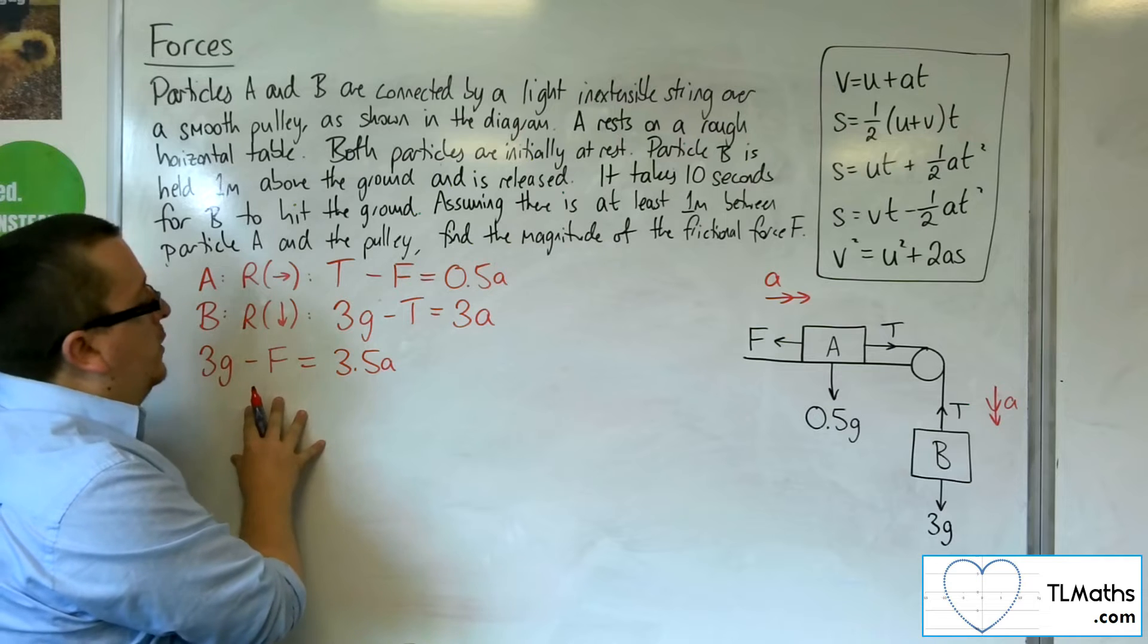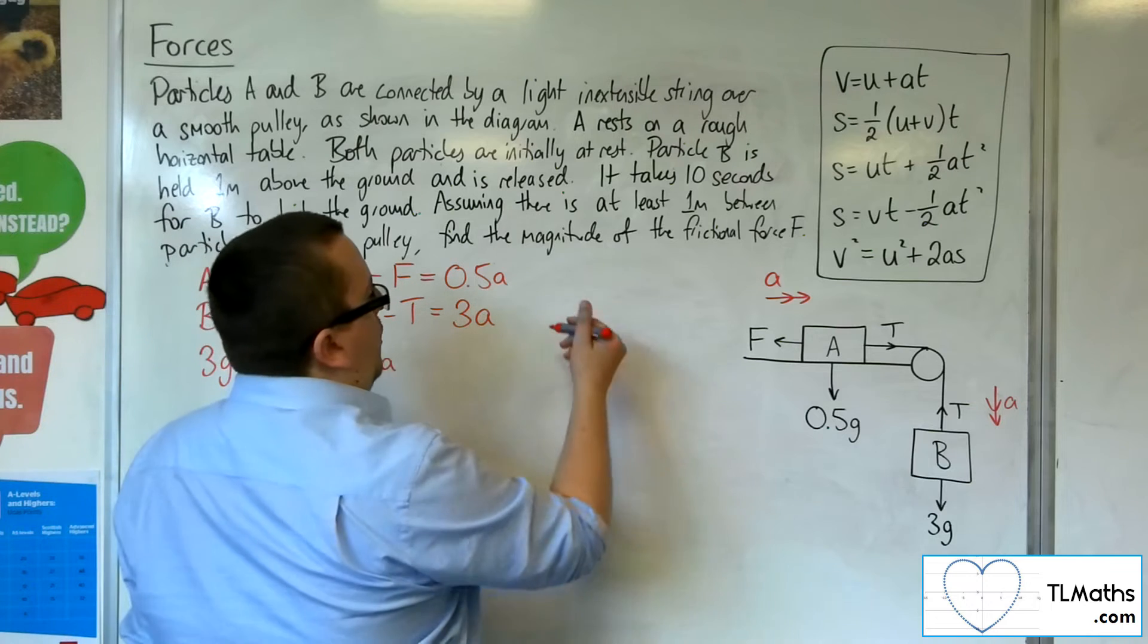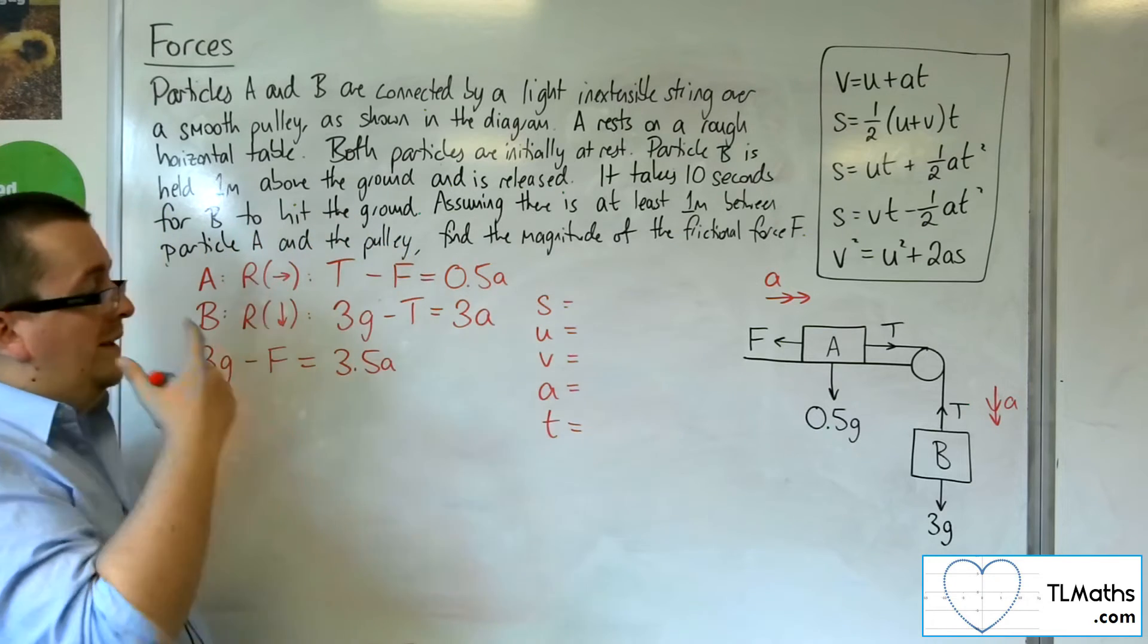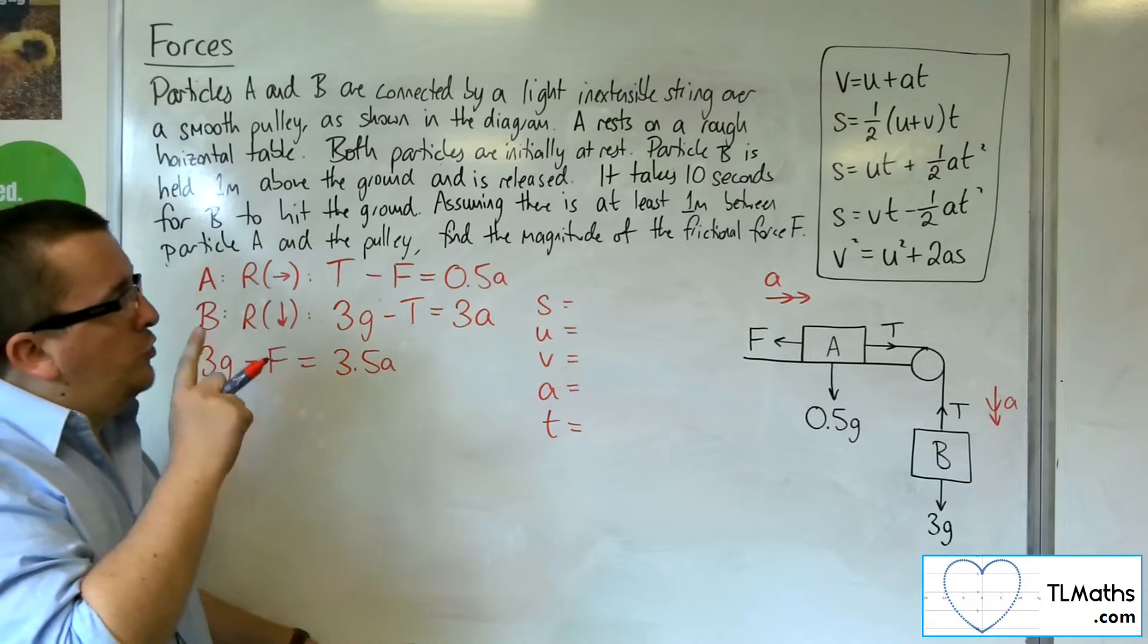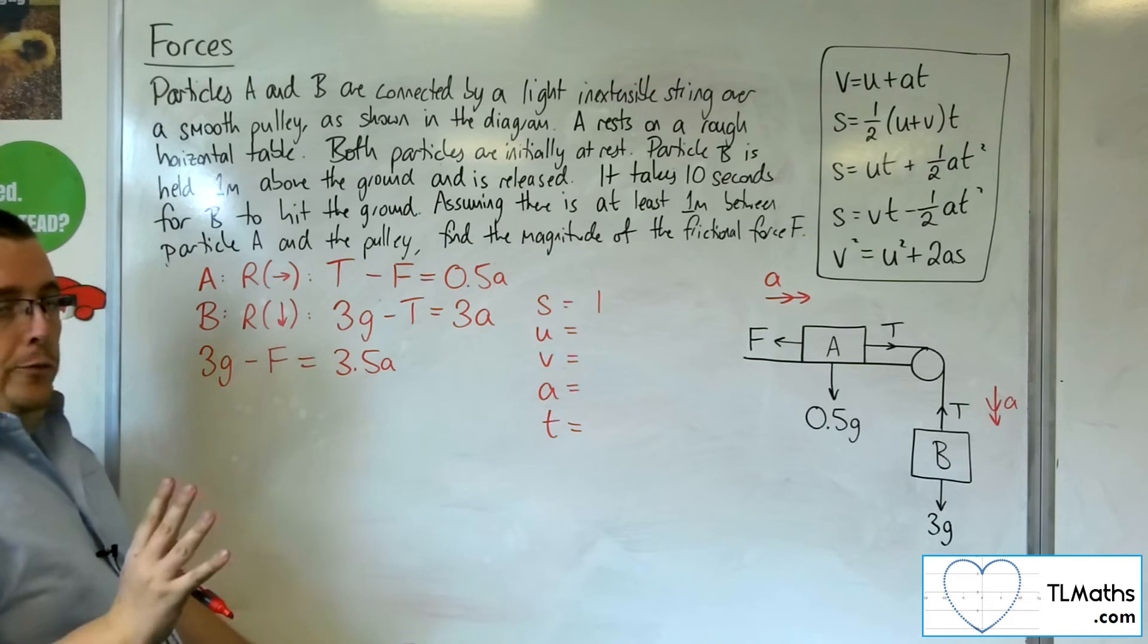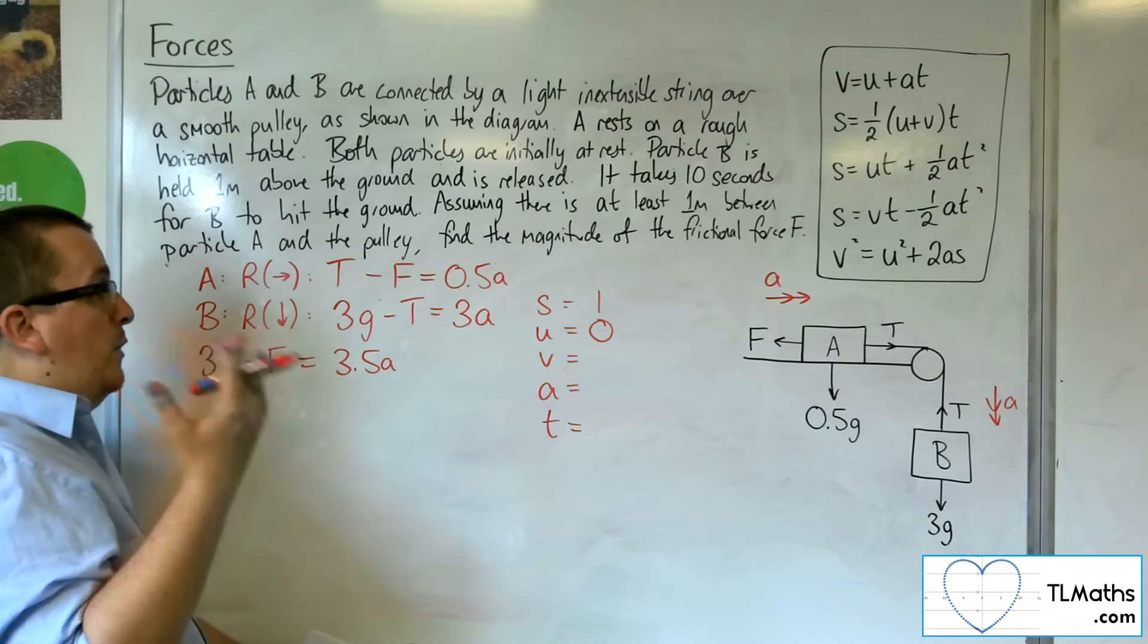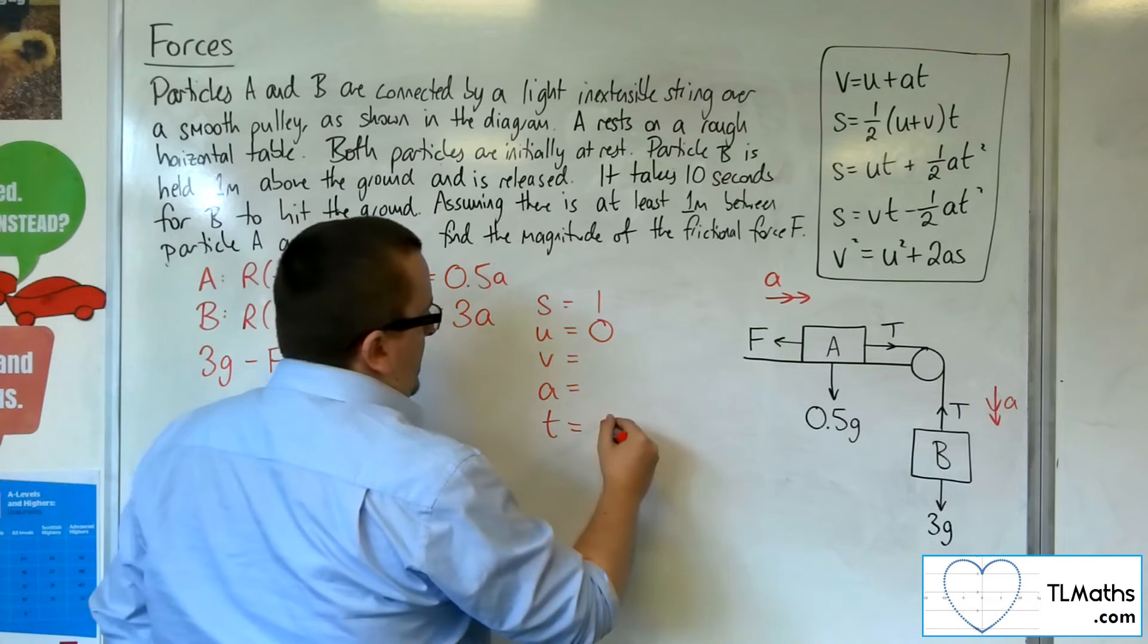Now, from here, we're going to have to look at the SUVAT equations, because that's really all we can do. We haven't got much else to go on. So, what we know is that we've got to travel 1 metre. So that's S. The initial speed is that they are at rest, so that would be 0. We don't know the final velocity. We don't know the acceleration.